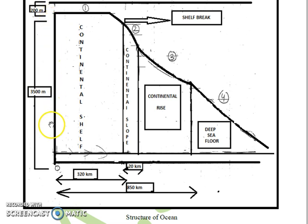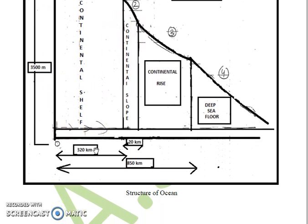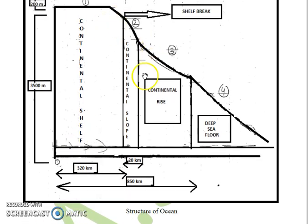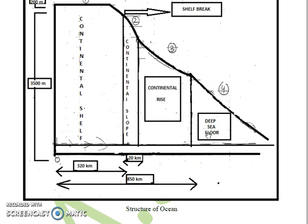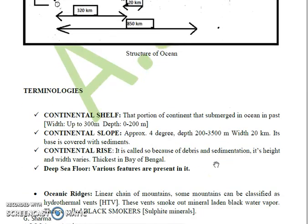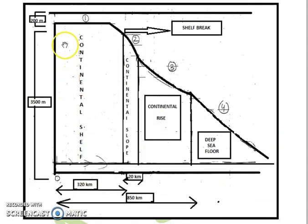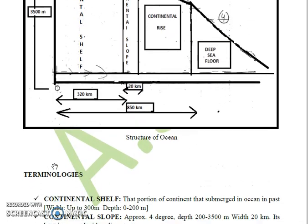The first part is the continental shelf. It refers to the portion of the continent that is submerged in the ocean. The depth of the continental shelf is 0 to 200 meters, as shown in the diagram, and its width extends up to 300 kilometers from the land or shore.